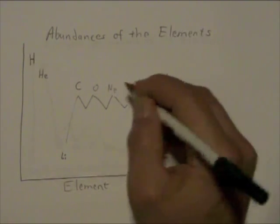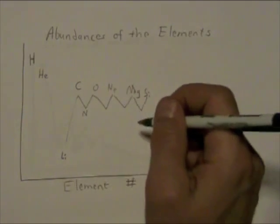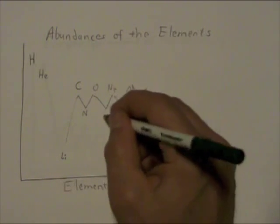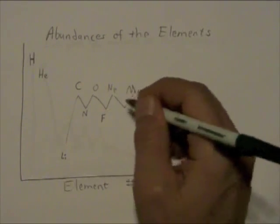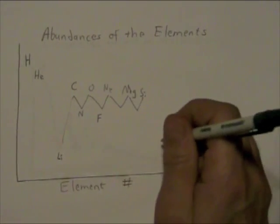And very little of the odd-numbered elements in between. Not very little, but relatively little. So there's less nitrogen than carbon or oxygen, and there's definitely less fluorine than oxygen or neon, and so on. You get this sawtooth pattern.